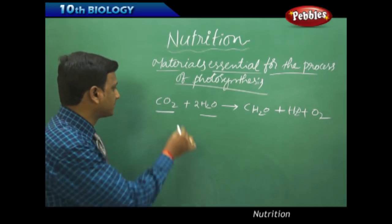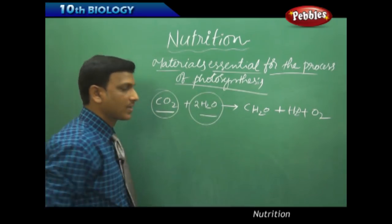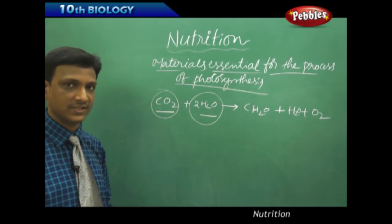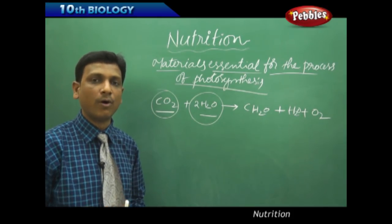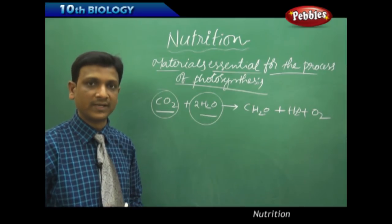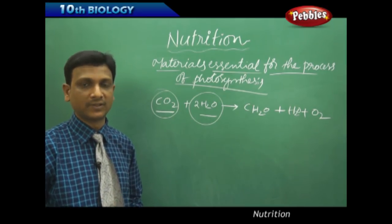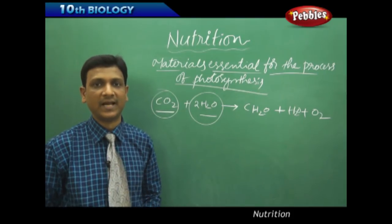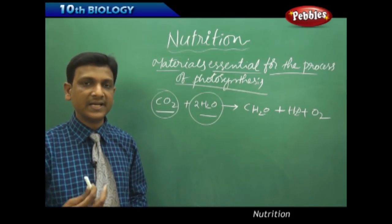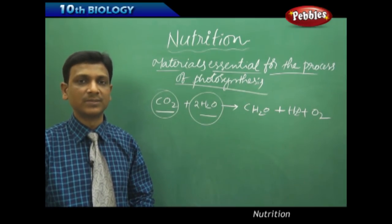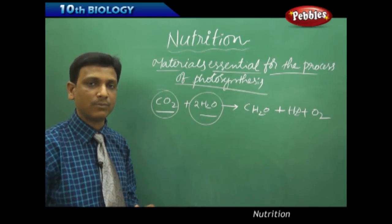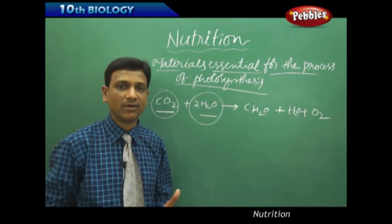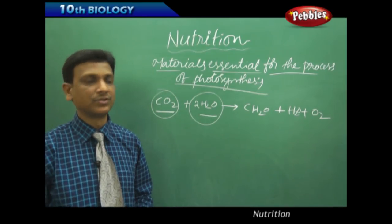Now let us see the importance of water for the process of photosynthesis. Van Helmond's experiment proved that water is necessary and essential for plant growth. He proved that water helps in increasing the mass of the plant. Earlier it was thought that the soil was responsible for the growth of the plant, but Van Helmond's experiment proved that water is essential for increasing the mass of the plant.